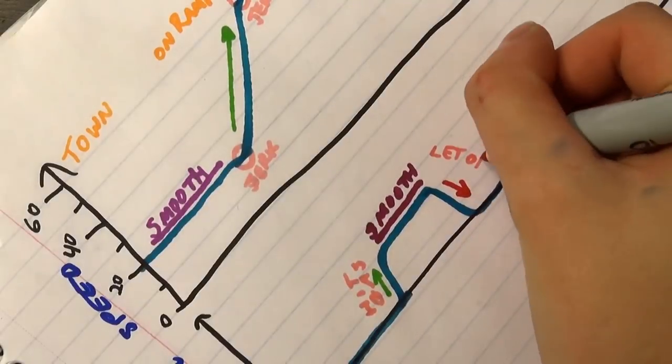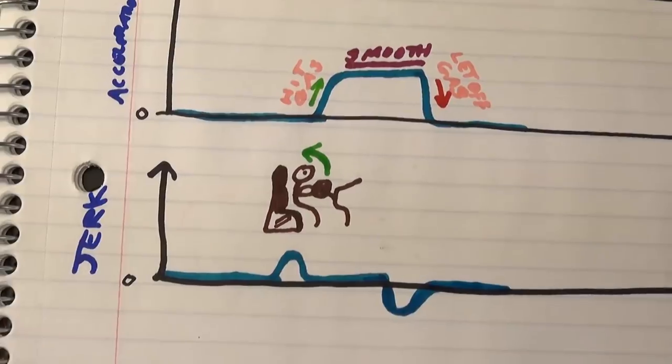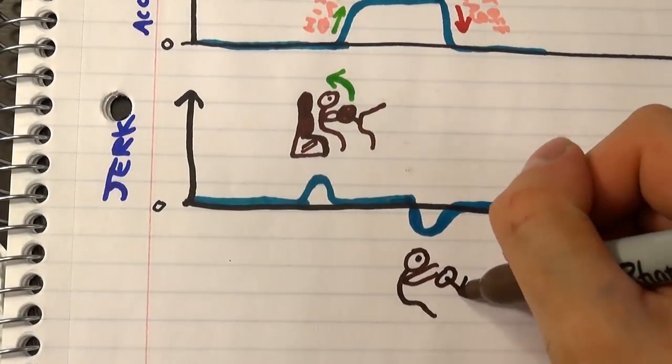Or technically it's a negative jerk. When you hit the gas, you get jerked back into your seat. But when you suddenly let off the gas, you get jerked towards the windshield a little.